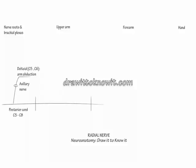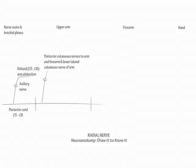Show the sensory branches: the posterior cutaneous nerves to the arm and forearm, and the lower lateral cutaneous nerve of the arm. These nerves cover the midline posterior arm and forearm and anterior upper arm. We will map their sensory coverage in the sensory maps of the body chapter. Now show the motor branch to the triceps muscle.